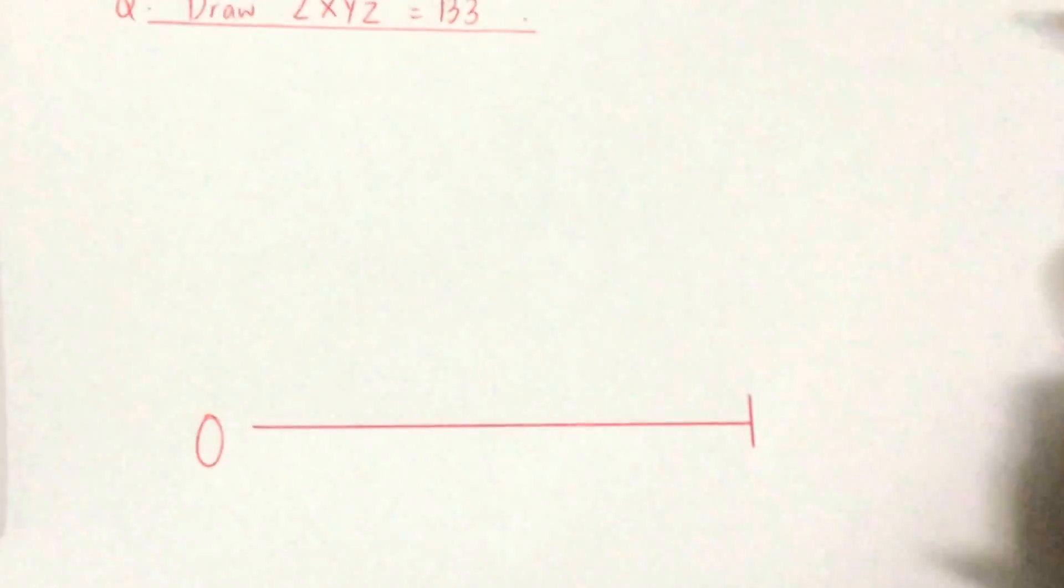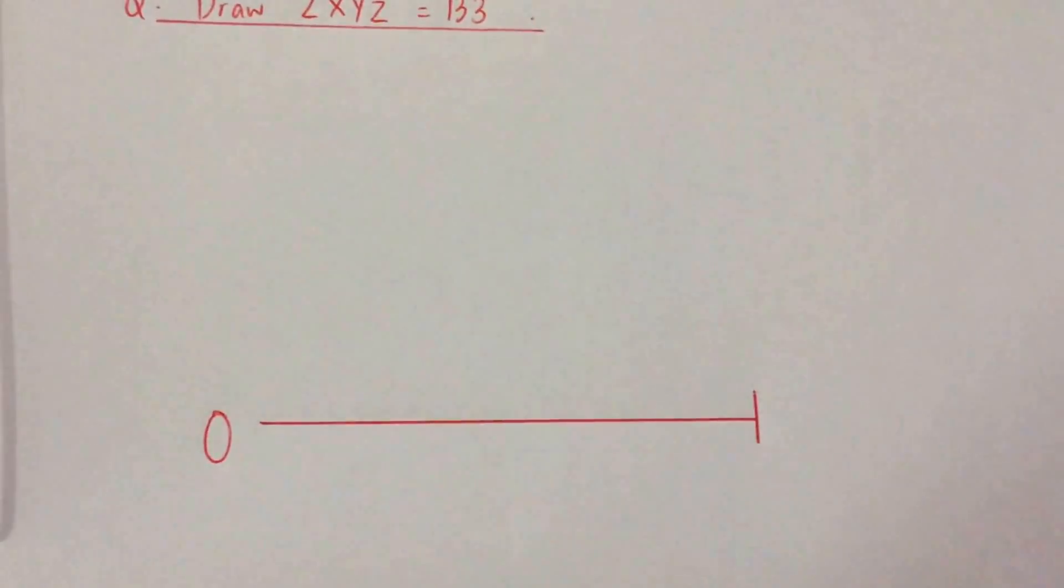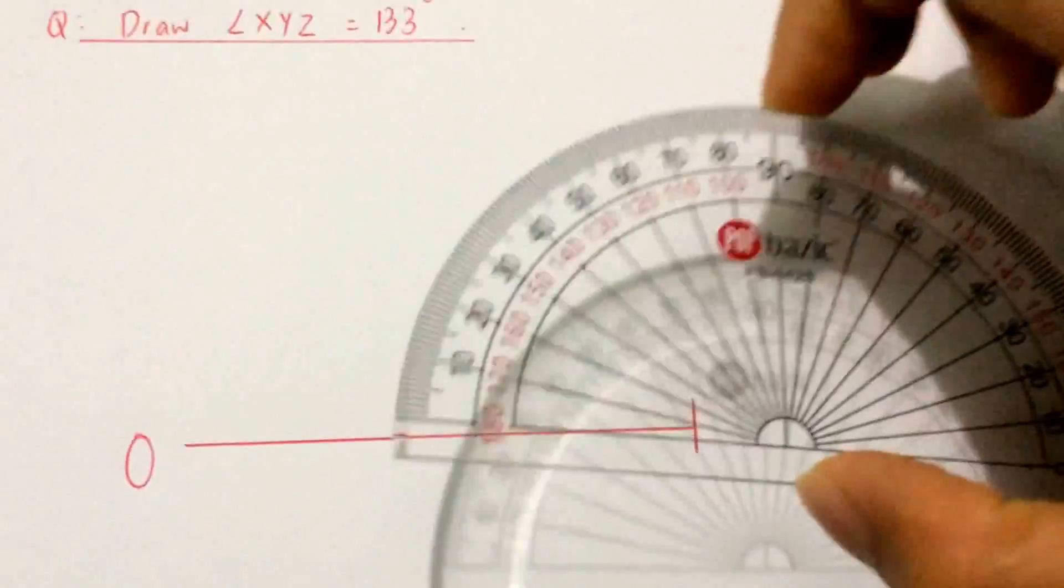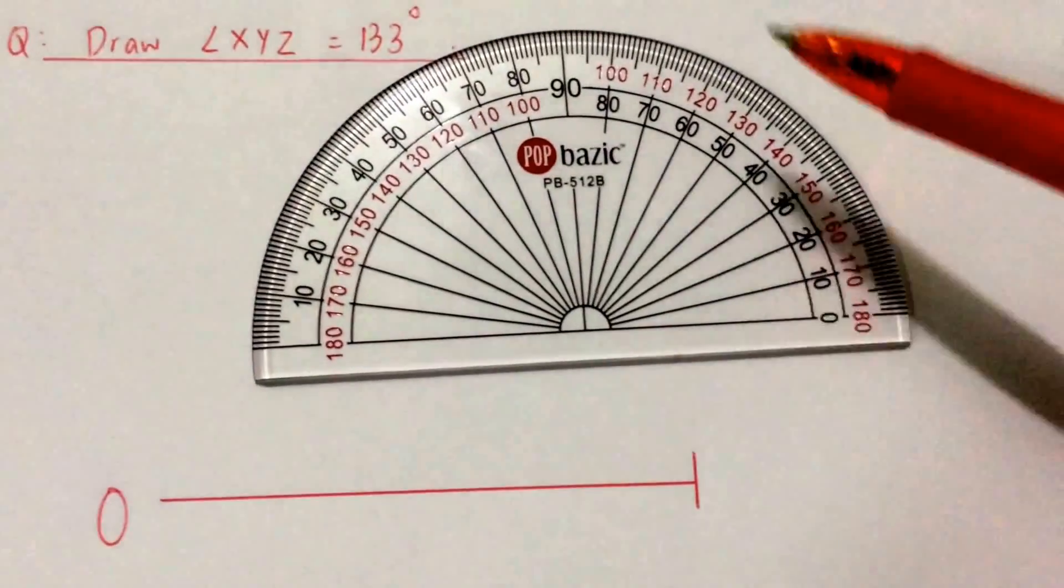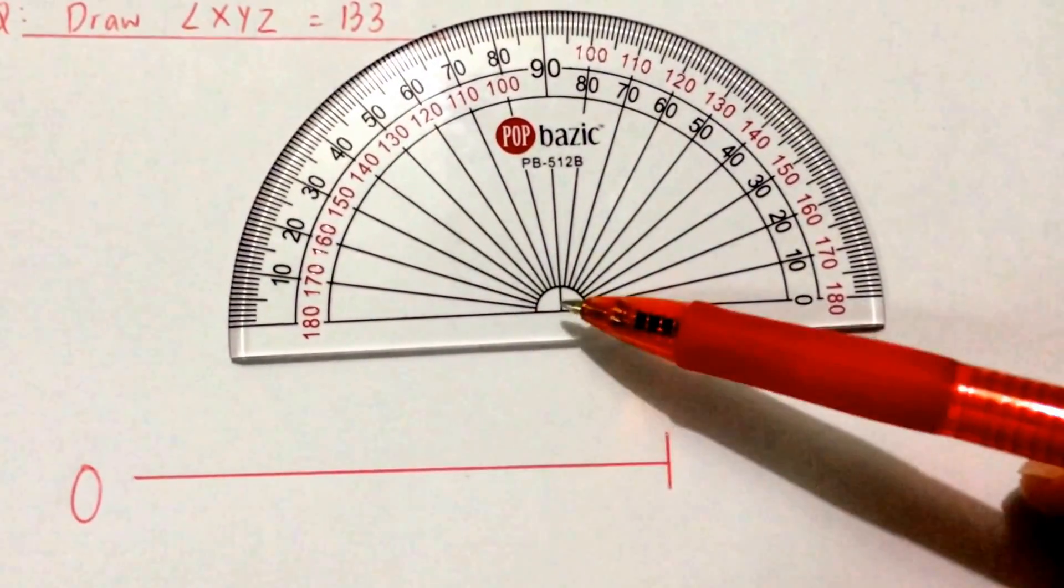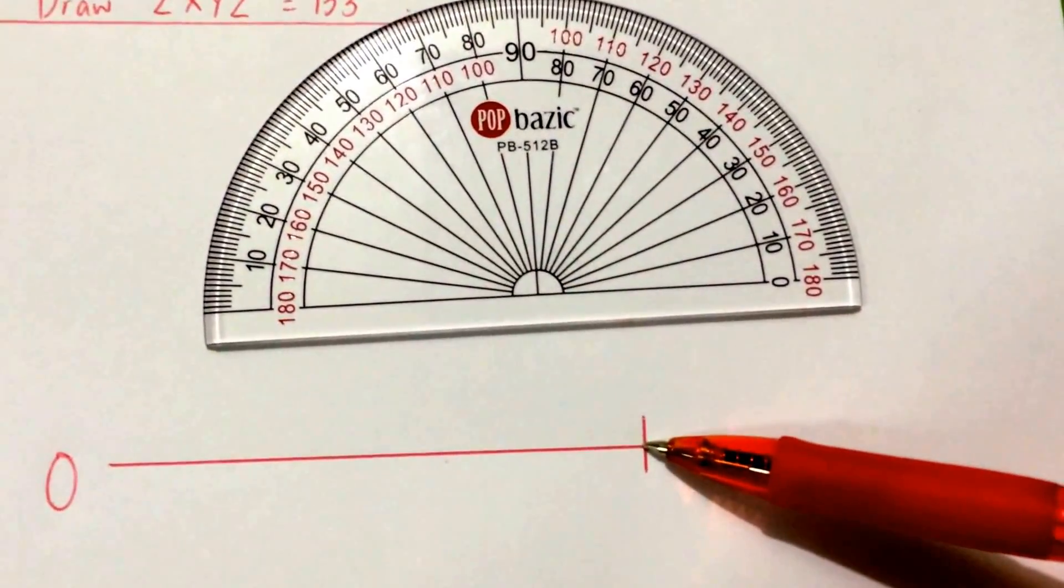What I do next is to put my protractor on this line. Remember that this black line needs to be on this red line and this point needs to be at this point.